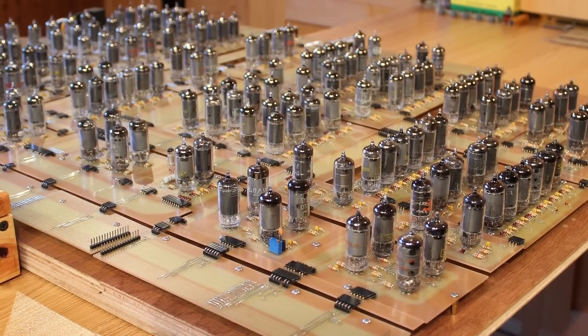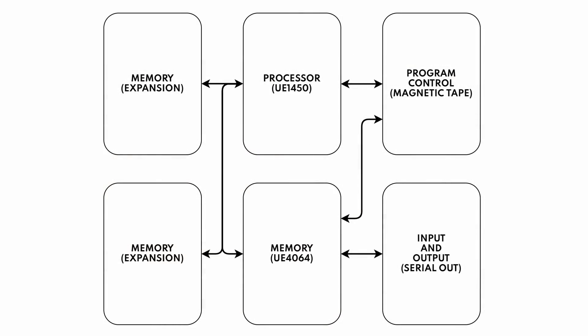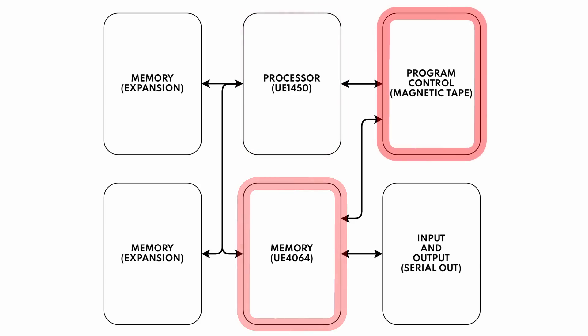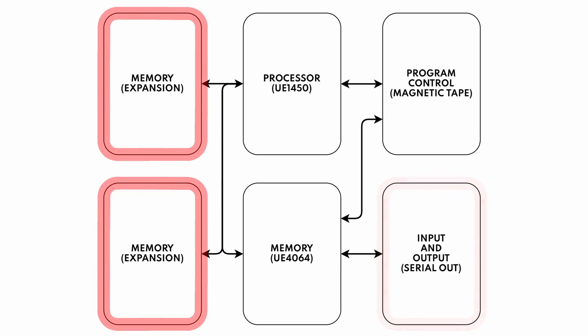The processor currently takes up one board, and I think ultimately when the computer is all said and done we can potentially get it out to six total boards. We have the processor, we have the vacuum tube memory that we're currently working on, we'll have program control which will hopefully have some reel-to-reel stuff bolted to it, we have input/output which will let us talk to a data terminal or a teletype, and then we have two boards for memory expansion to get the machine up to a more usable level of RAM. But it is a huge system — physically huge as well as in scope.